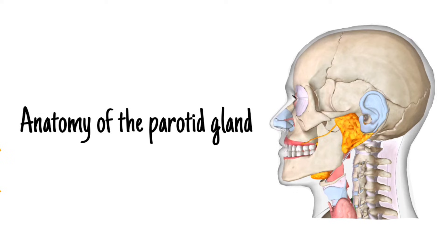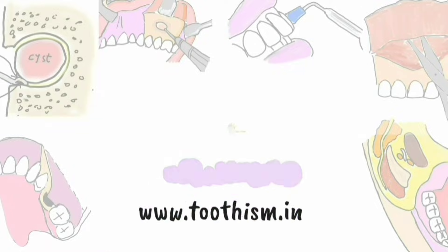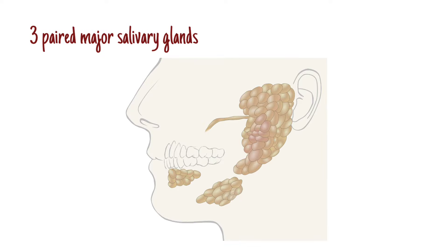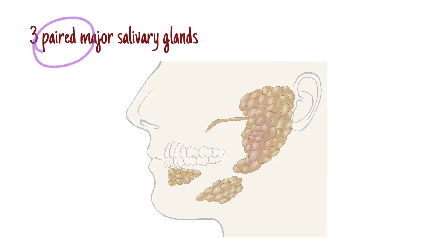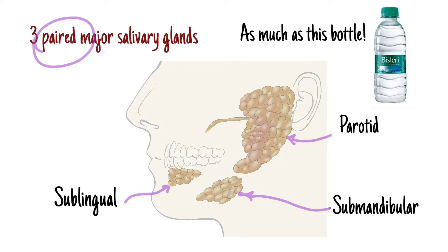Today we are going to learn the anatomy of the parotid gland, which is one of the major salivary glands. There are three major salivary glands and these are paired, meaning there is one on each side. The three major salivary glands are parotid, submandibular and sublingual gland. Along with the minor salivary glands, they secrete approximately 500 milliliters of saliva per day.